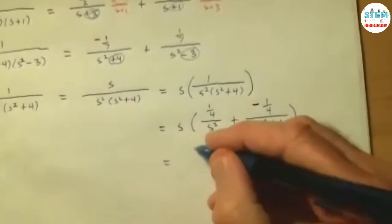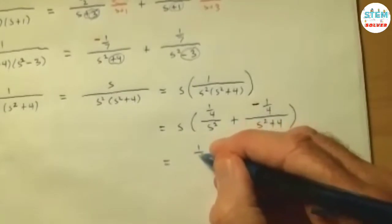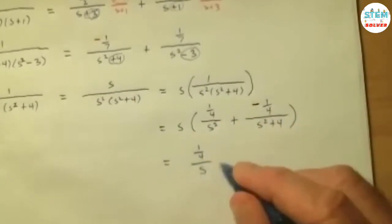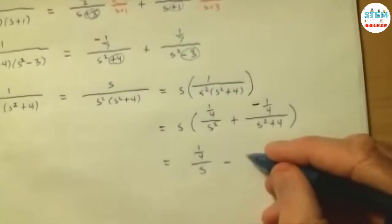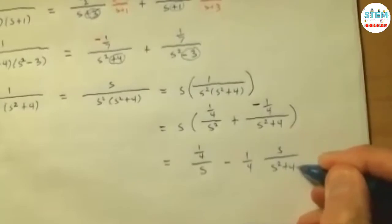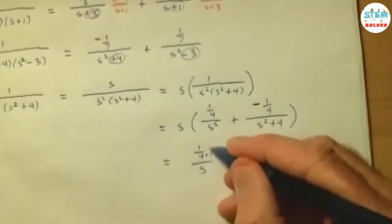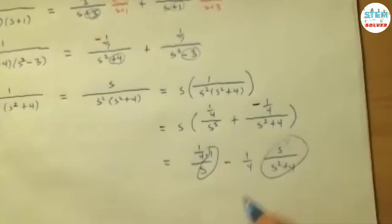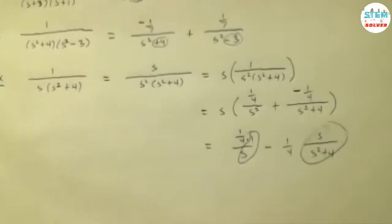Now, what about this s? What you're going to do is you're going to bring it back in again, right? So, you'd have 1 fourth over s, right? Minus 1 fourth times s over s squared plus 4. And you notice, you know this transform, right? This is 1 over this. You can take the inverse transform of that. Take the inverse transform of that. And you're done, right?